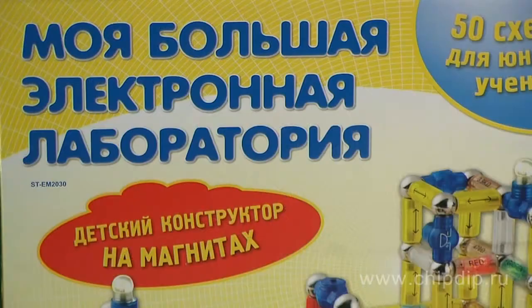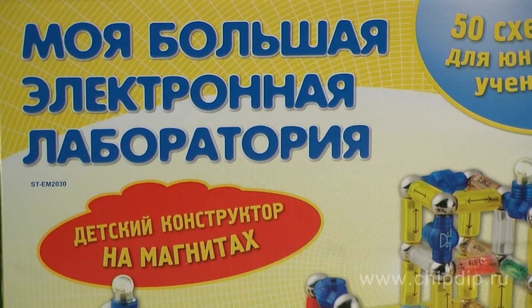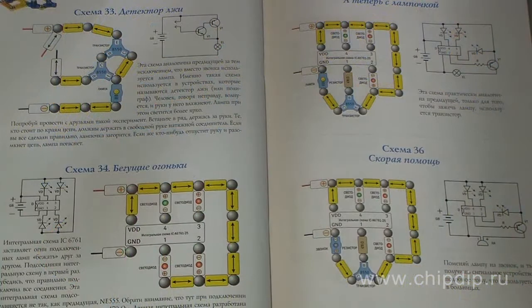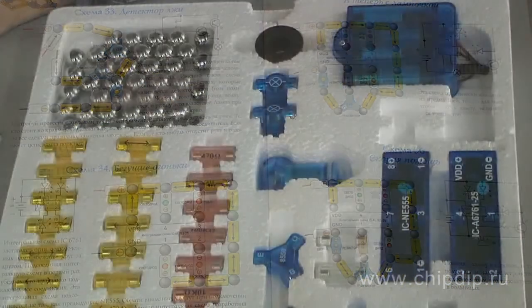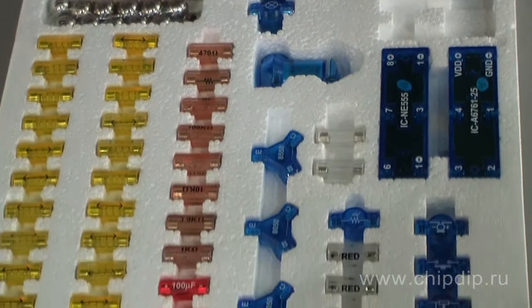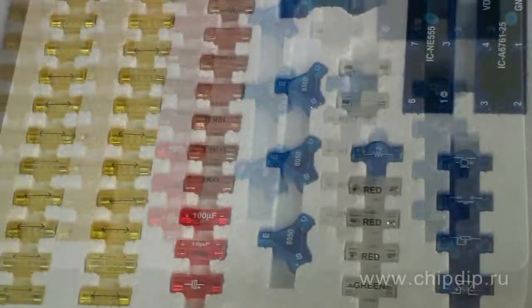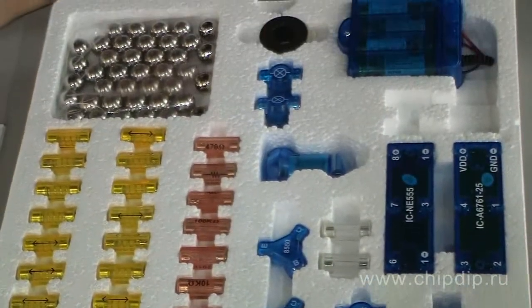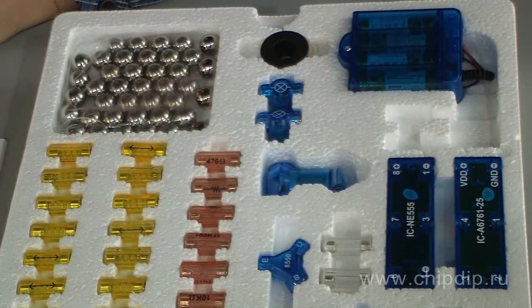My Big Electric Laboratory Construction Set is a magnetic construction set that allows assembling primitive electric circuits. This toy will be interesting to young scientists and engineers who are into electronics. The toy combines magnetic and electric construction sets in one, and it is very easy to use.